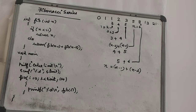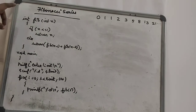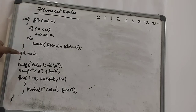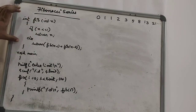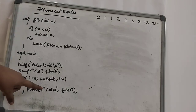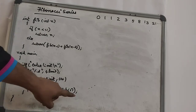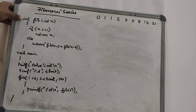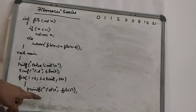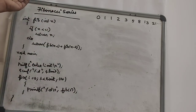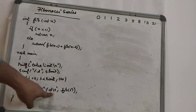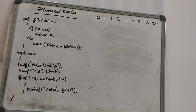Now we look at the concept of the Fibonacci series using recursion. If you look at the program, it includes the main function, variable declaration, and the void main declaration part. Next is the function definition part and the function call.